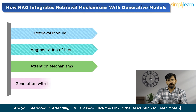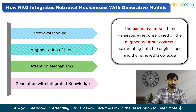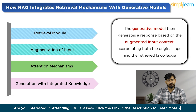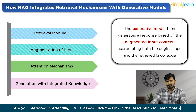The generative model then generates a response based on the augmented input context, incorporating both the original input and the retrieved knowledge. By leveraging both internal knowledge encoded during pre-training and external knowledge retrieved at inference time, RAG produces responses that are coherent, contextually appropriate, factual, and informative. This approach enables RAG to excel in a wide range of NLP tasks including question answering, text summarization, and dialogue generation, where access to external knowledge is crucial.